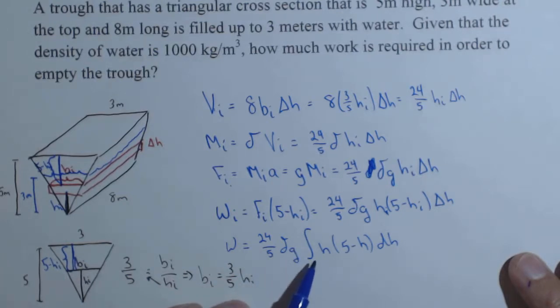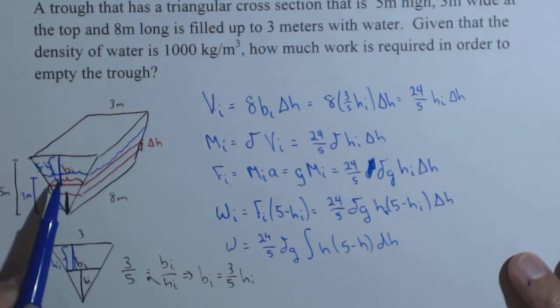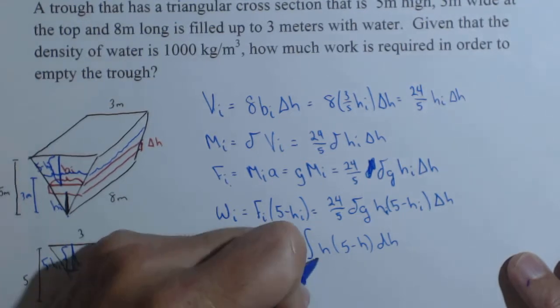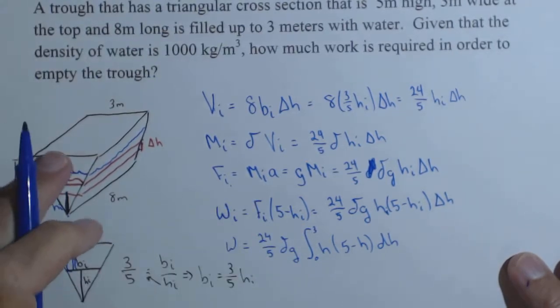Now, let's think about our limits. Now, remember what we're integrating over. Your first thought might be 0 to 5. And if it were a full tank, that'd be correct. We're only integrating over the water. And the water ranges, as far as we described H, from 0 to 3.